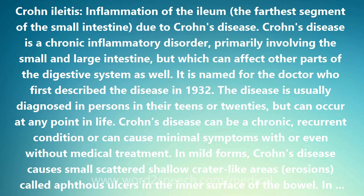Crohn's disease has many forms. Involvement of the large intestine, or colon, only is called Crohn's colitis or granulomatous colitis, while involvement of the small intestine alone is called Crohn's enteritis. The most common part of the small intestine to be affected is the last portion, called the ileum. Active disease in this area is termed Crohn's ileitis. When both the small intestine and the large intestine are involved, the condition is called Crohn's enterocolitis, or ileocolitis. Other descriptive terms may be used as well.